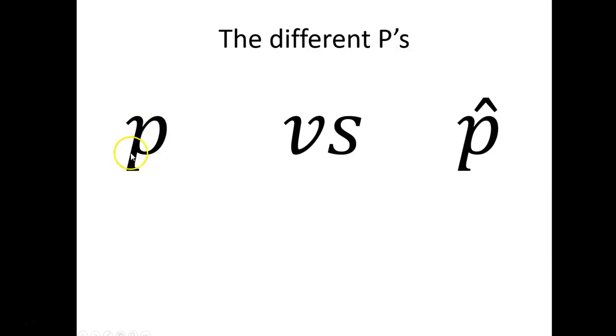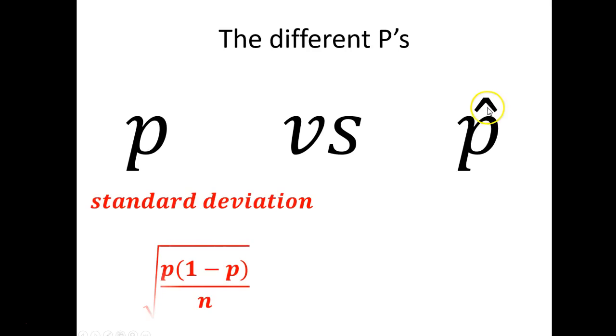And when we take a sample, we no longer can use just P. P implies this is the real proportion of diseased sea fans. P hat is really exactly the same in the way we're using it mathematically. The only difference now is that I'm letting you know that this is just from a sample. So that little hat is just letting the world know that this is just a sample.